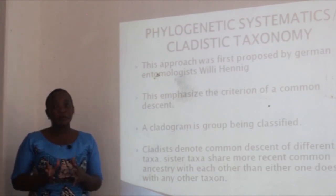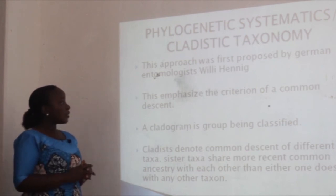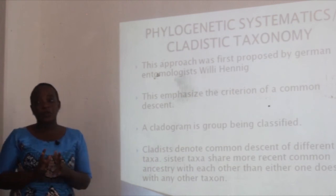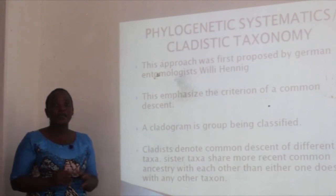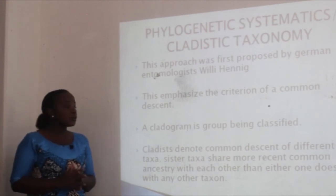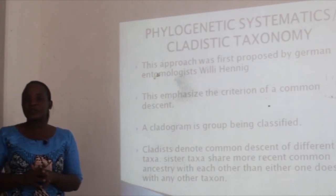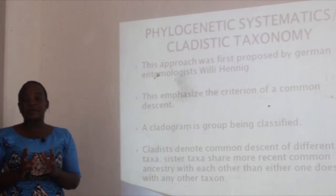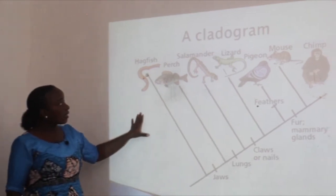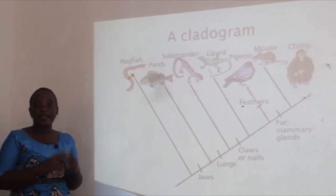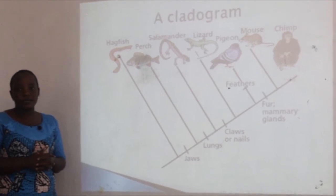This approach was first proposed by the German entomologist Willy Hennig. He emphasized the criterion of common descent and used the cladogram, which shows the group being classified. Cladists may note the common descent of different taxa — sister taxa share more recent common ancestry with each other than anyone does with any other taxa. A cladogram is a diagram that shows evolutionary relationships between organisms.